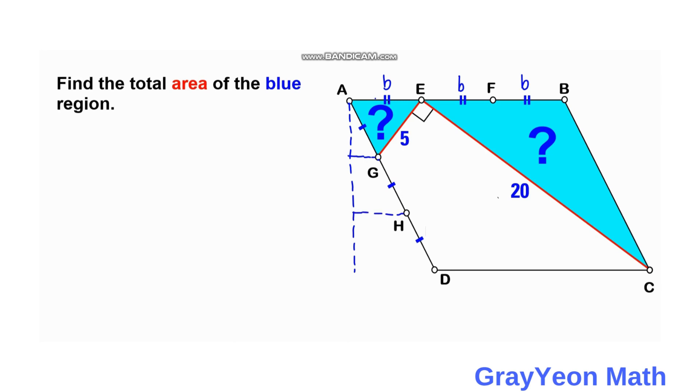And this horizontal line will be equal also. So we can label this as h and h and h.